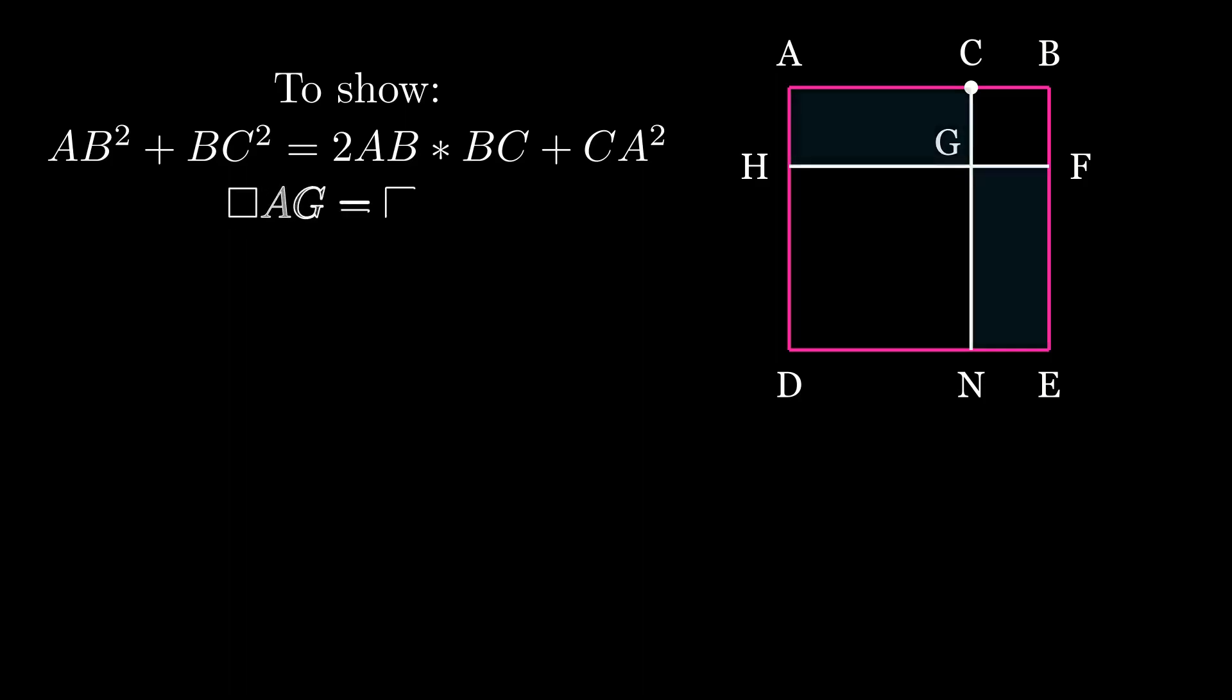Now the complements of this are equal, AG and GE, so if we add the square on CB to both of these, we find that AF is equal to CE.